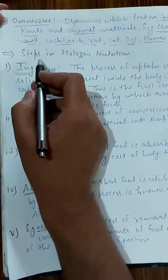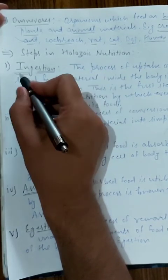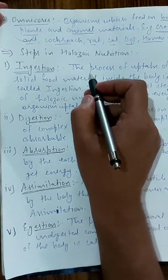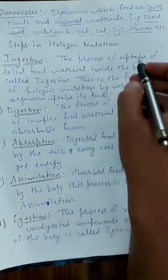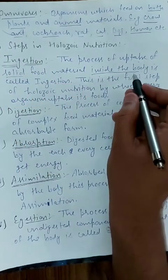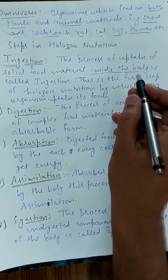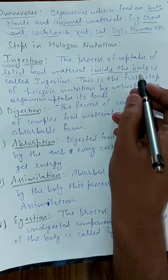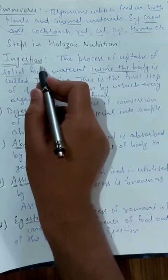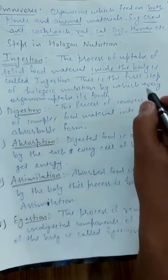Now there are different steps in holozoic nutrition. The first step is ingestion. 'In' means inside, so ingestion is the process of taking solid food material inside the body. Whether the organism takes it through the mouth directly, or with the help of hands, or using cilia and flagella in lower organisms — the process of taking food inside the body is called ingestion. Different organisms have different strategies for ingestion.